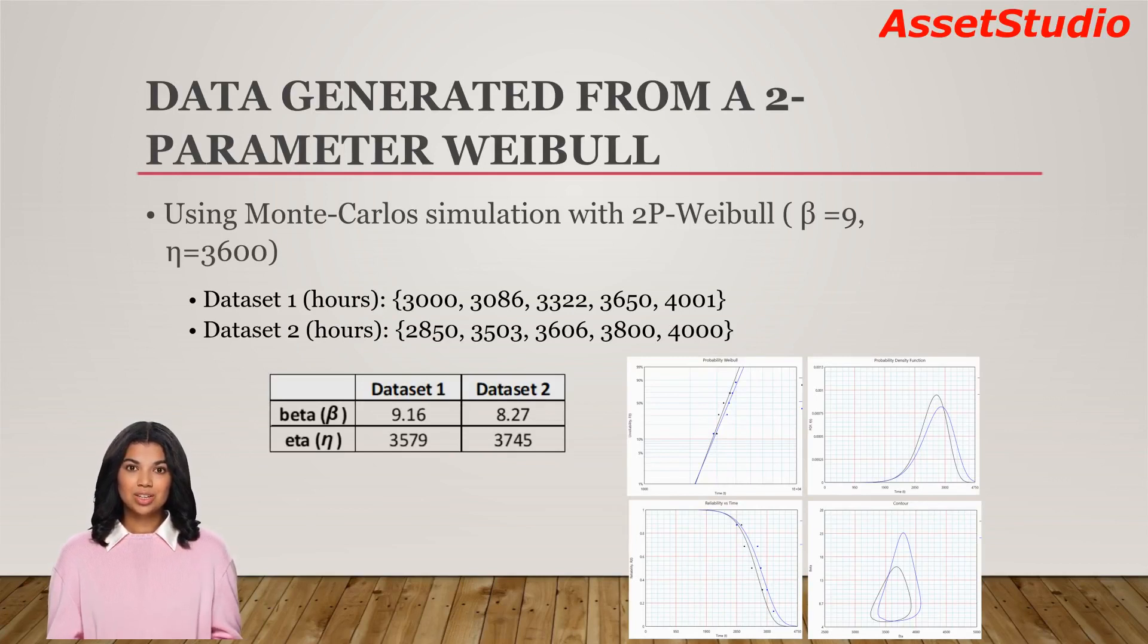Consider the following two time-to-failure datasets, dataset 1 and dataset 2, which are generated using Monte Carlo simulation from 2-parameter Weibull with the parameter beta and eta equal to 9 and 3600, respectively. Both the datasets are fitted with 2-parameter Weibull using rank regression on x, and the results are shown here.